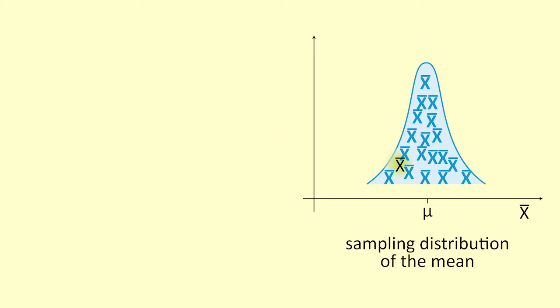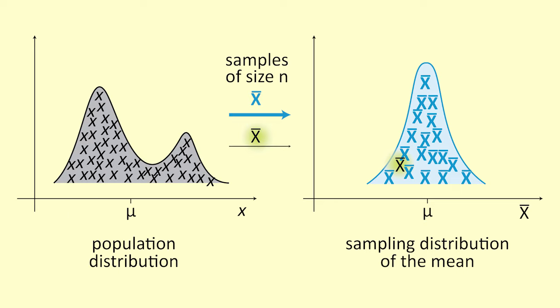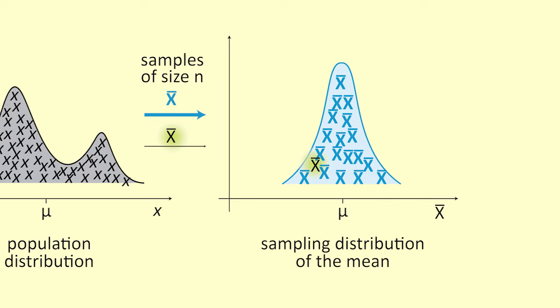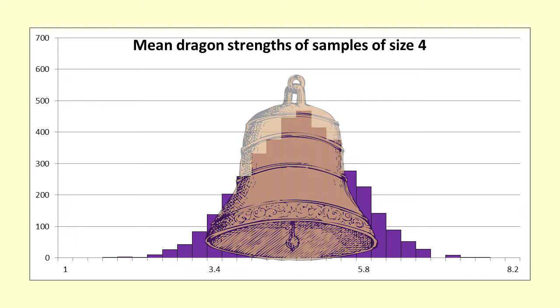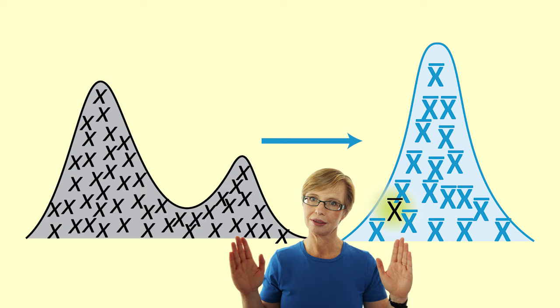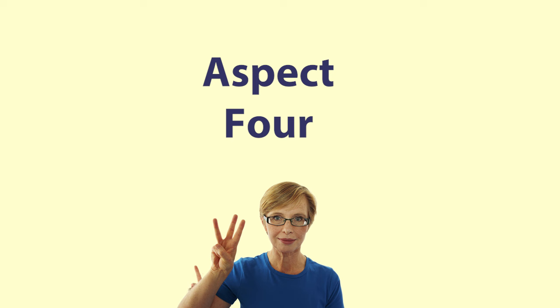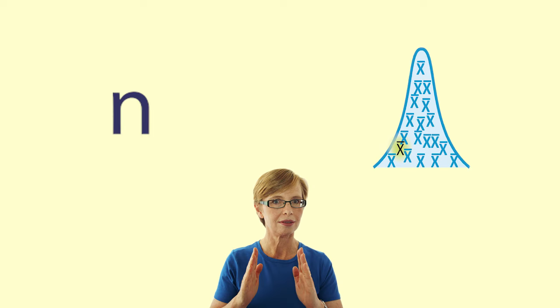I'm going to talk about four aspects of the Central Limit Theorem. Aspect 1: The sampling distribution of the mean will be less spread than the values in the population from which the sample is drawn. Aspect 2: The sampling distribution will be well modelled by a normal distribution. Aspect 3: The spread of the sampling distribution is related to the spread of the population values. Aspect 4: Bigger samples lead to a smaller spread in the sampling distribution.